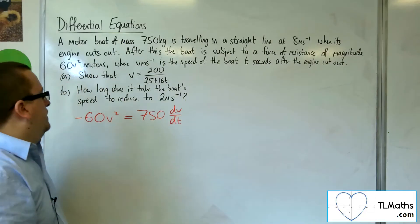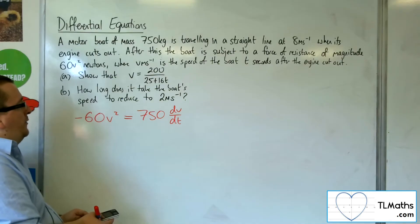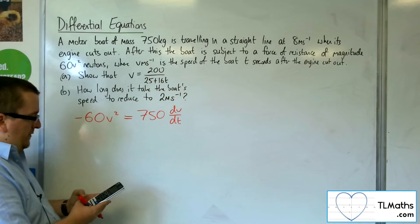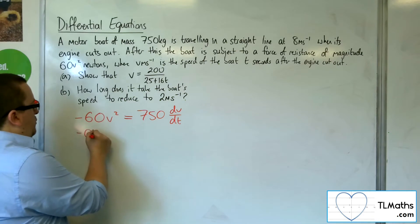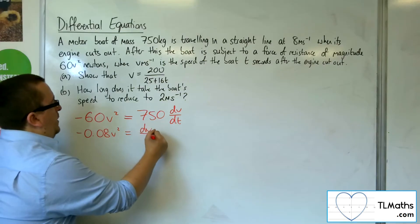So what I'll probably do first here is divide both sides by the 750. So minus 60 divided by 750 is minus 0.08. So we've got minus 0.08V squared is equal to DV by DT.